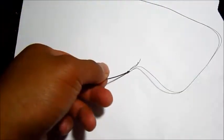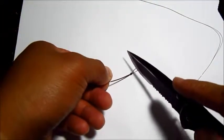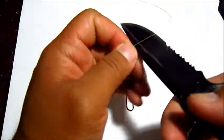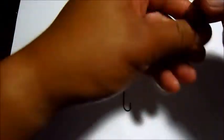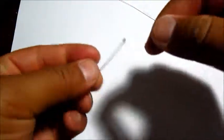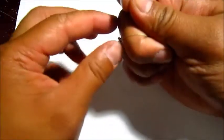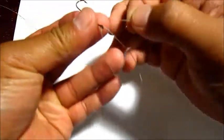Okay. Next we're going to do the Palomar Knot. Put it through the eye, and then come back around and put it back in the eye, so you have a loop on one side.